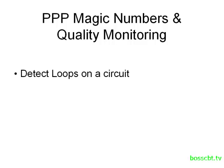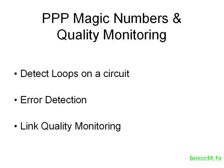We're going to start off by taking a look at loop detection and how PPP performs that, and that brings up the magic numbers concept. We'll be taking a look at that in some detail. Then we'll briefly look at how PPP detects errors in frames. That portion is pretty straightforward, but it leads us into the concept of link quality monitoring.